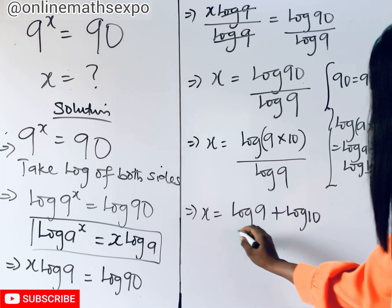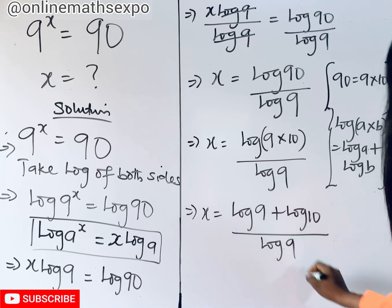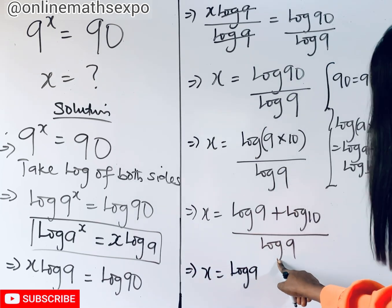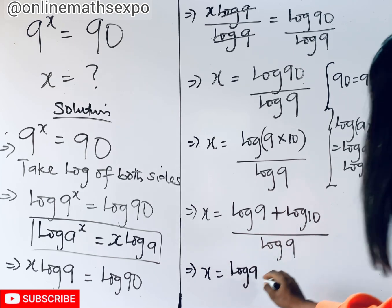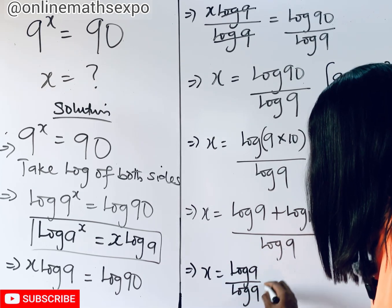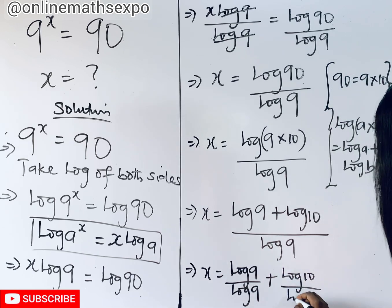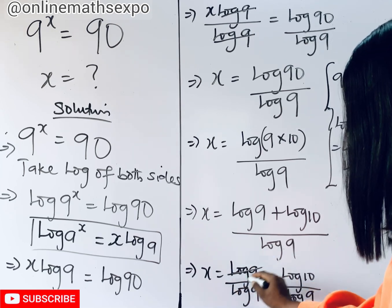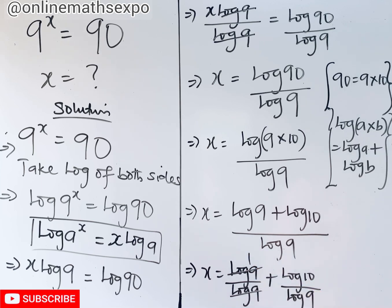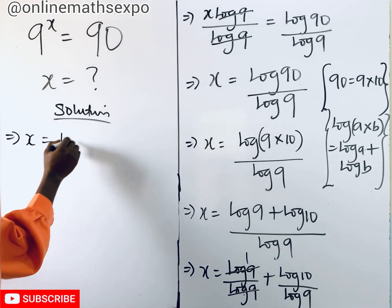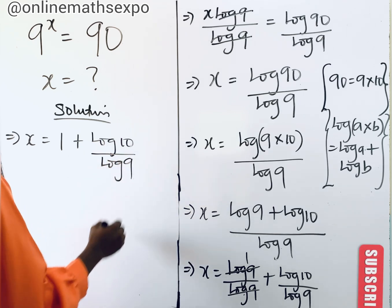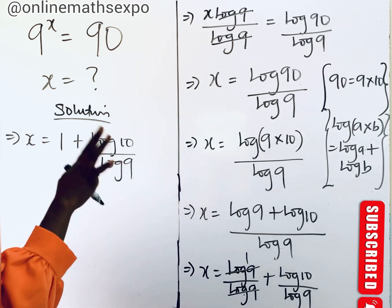We keep simplifying. We are free to divide each term in the numerator by the denominator separately: x equals log 9 over log 9 plus log 10 over log 9. Since log 9 divided by log 9 equals 1, we get x equals 1 plus log 10 divided by log 9. But don't be too quick to leave it this way — this is not yet in simplified form.